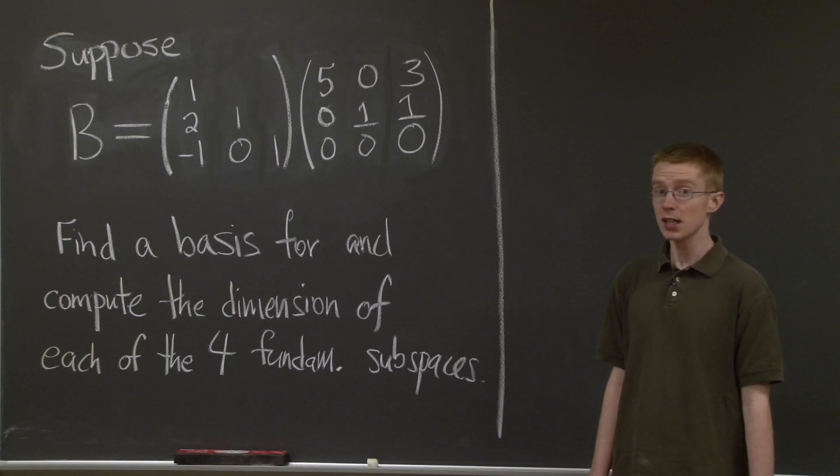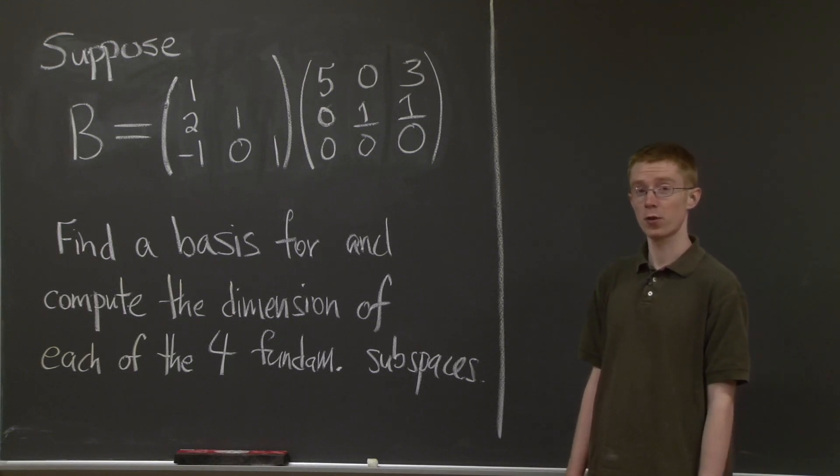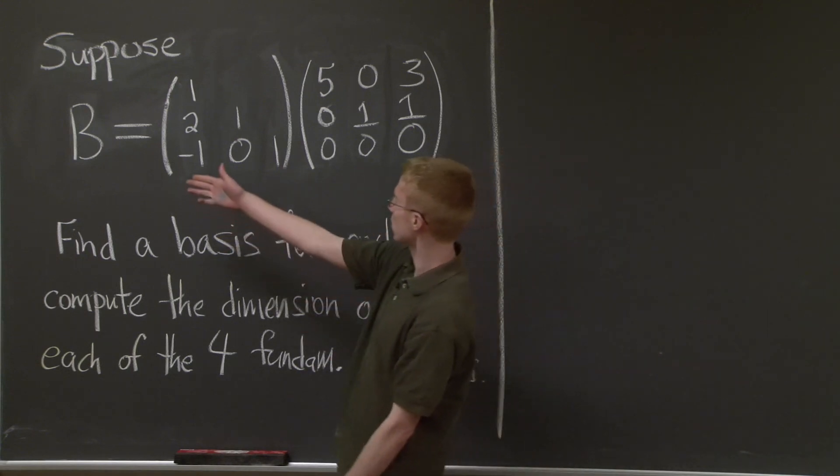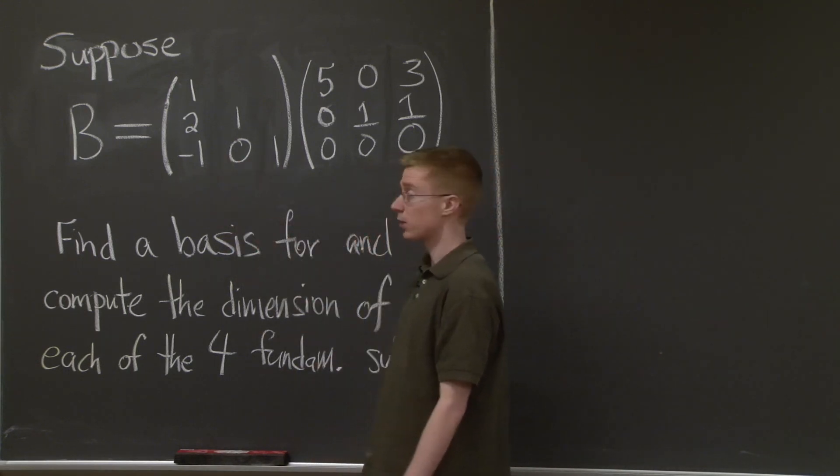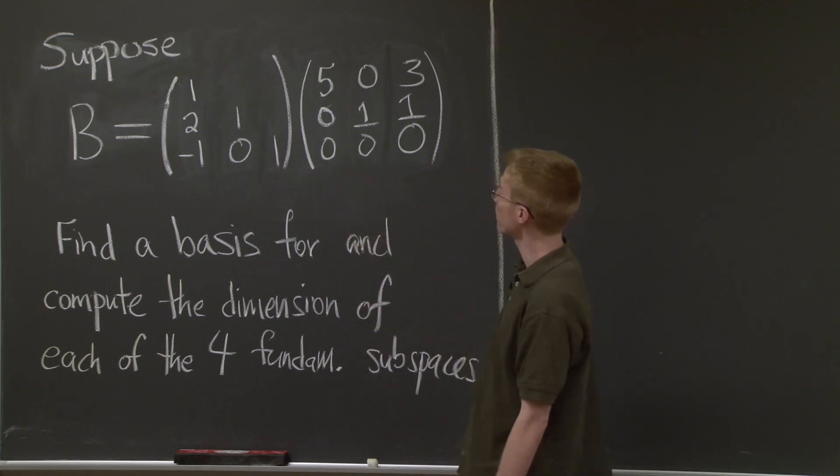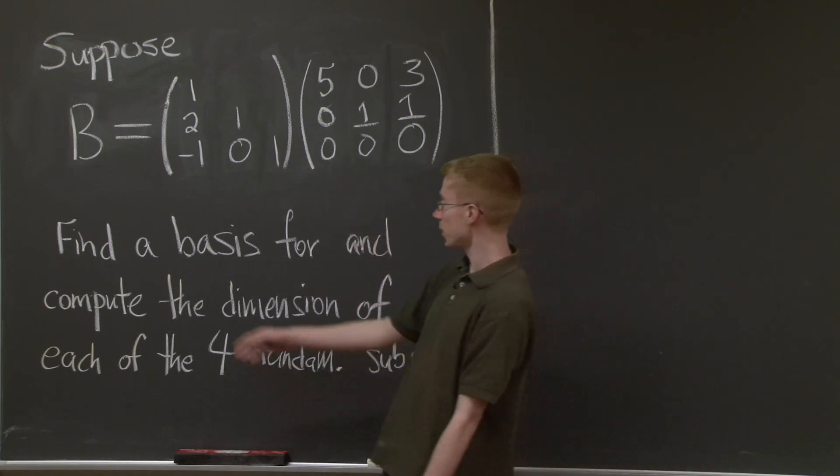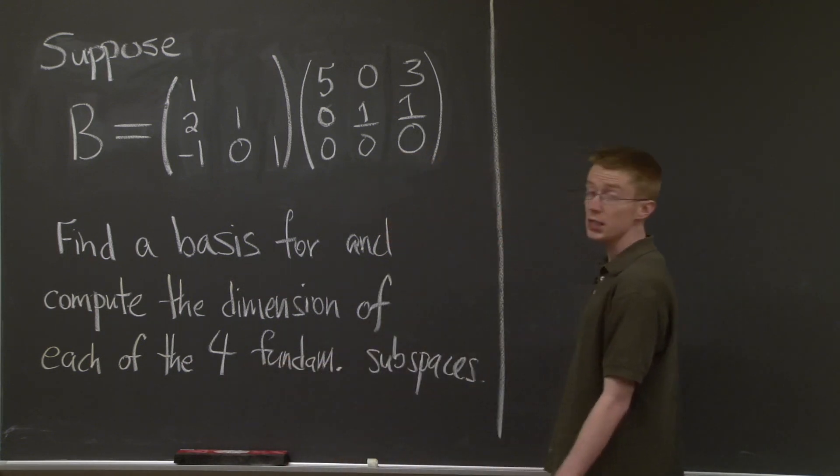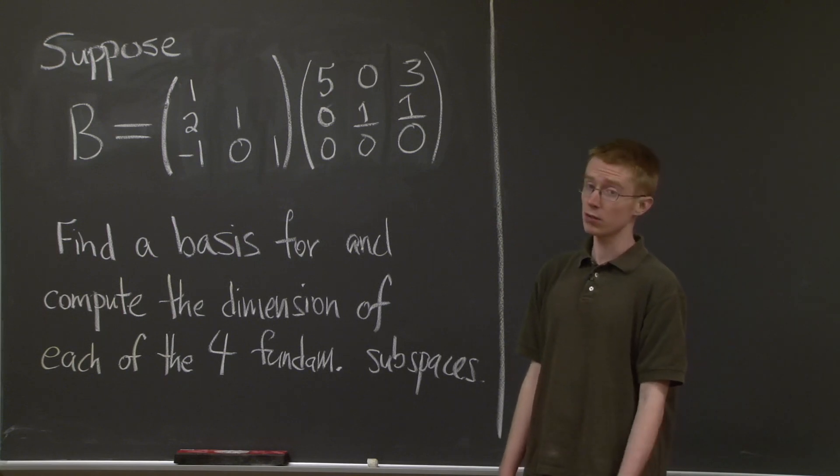Hi, and welcome back. Today we're going to do a problem about the four fundamental subspaces. So here we have a matrix B, written as the product of a lower triangular matrix and an upper triangular matrix. We're going to find a basis for and compute the dimension of each of the four fundamental subspaces of B. I'll give you a minute to try that on your own, to hit pause, and then I'll be right back and we can do it together.